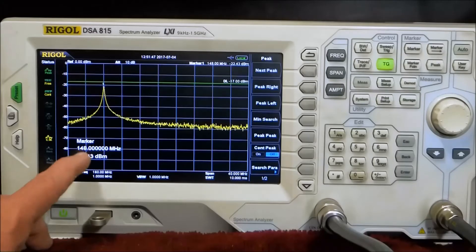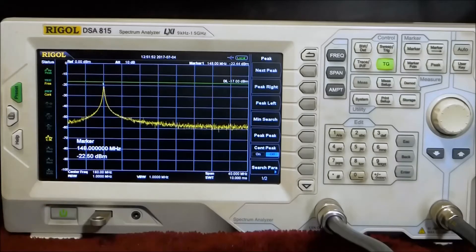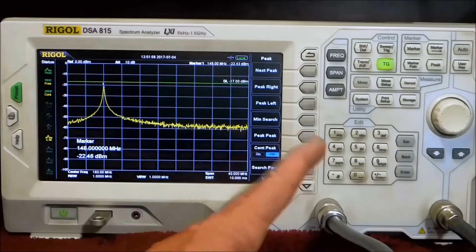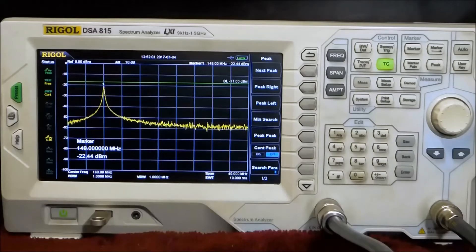Now this is misleading. It doesn't have that much loss. That's probably the tracking generator output level plus the loss of these cables, and that's why we have to normalize this to proceed further.